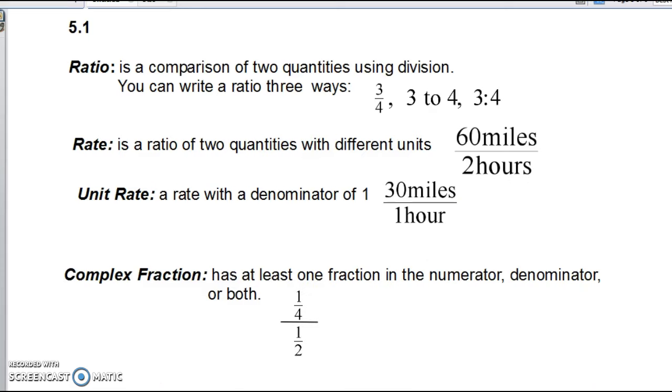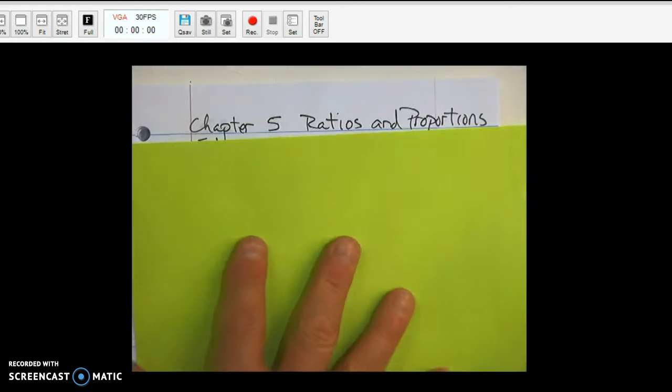A ratio. A ratio is a comparison of two quantities using division. You can write a ratio in three ways. Three over four as a fraction. Three over four as a fraction. Three to four or three colon four. Okay. I'm going to switch back to your notebook.